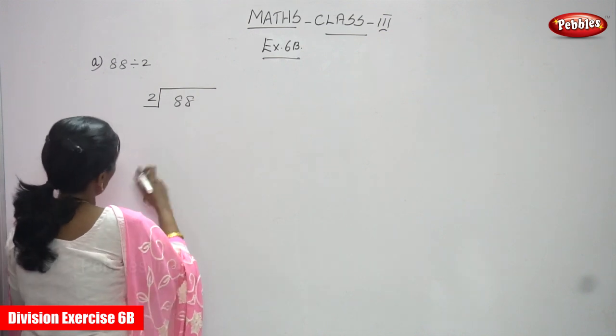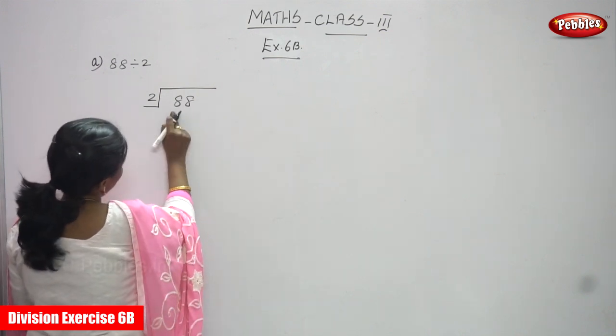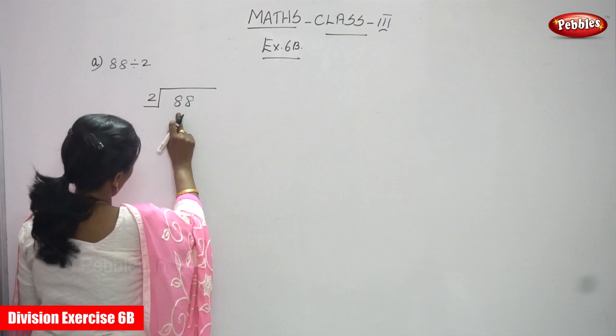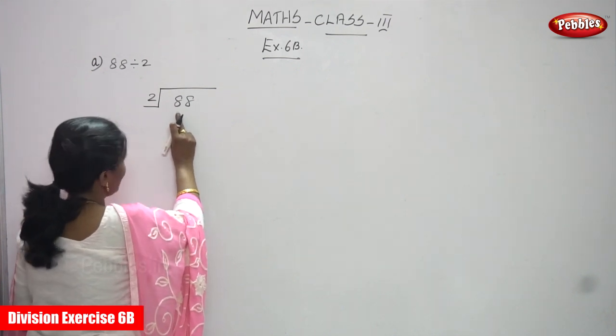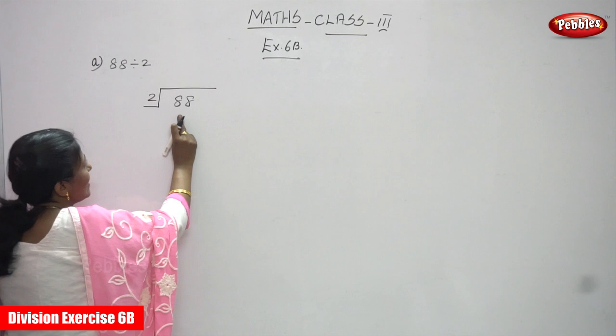88 is going to divide it by 2. So what is this? This is tens and this is ones. So first you have to compare with tens. So what is the number in tens place value? 8. 8 and 2.